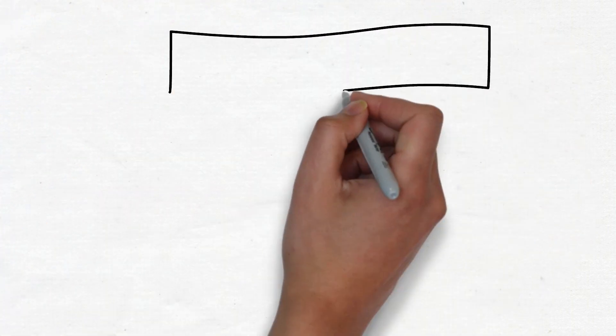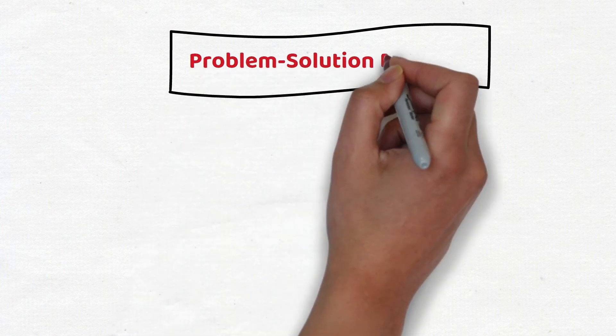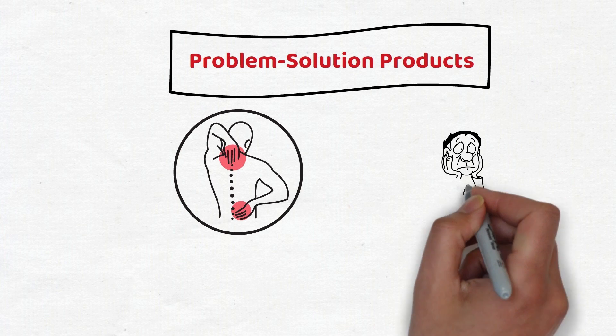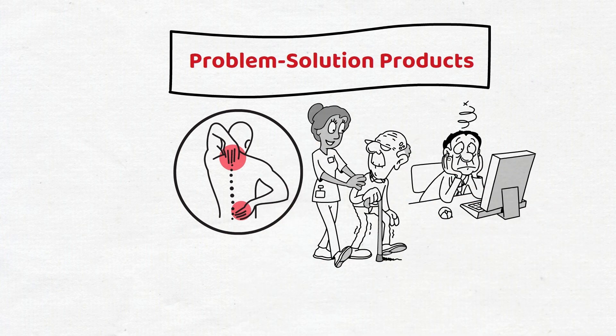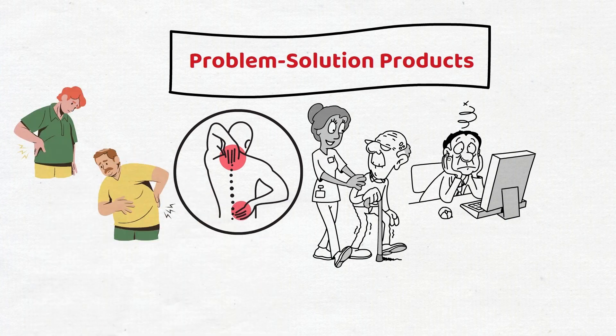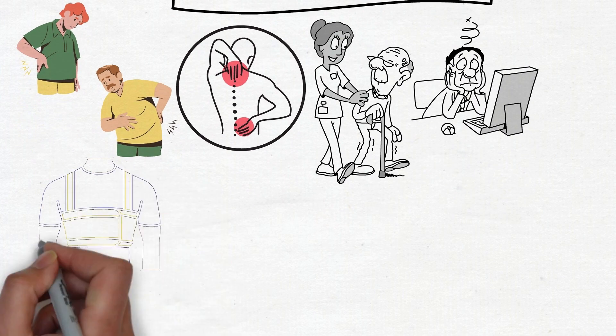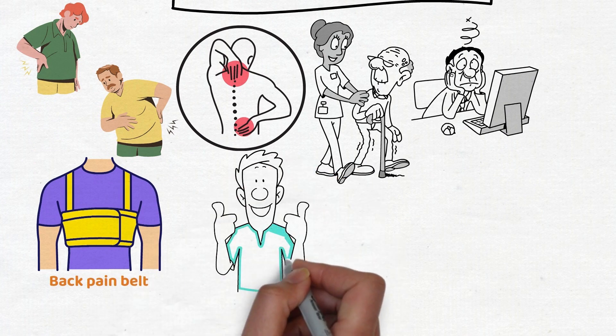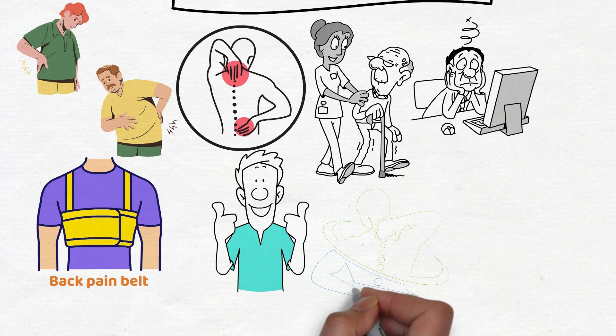Let's now enter another dimension of dropshipping: the problem-solution products. Consider back pain, a universal ailment affecting both office workers and the elderly alike. The reality is that this discomfort has become a distress signal for many individuals. Herein lies a golden opportunity: the back pain belt. More than just a product, it's a promise of well-being, offering support and posture correction.